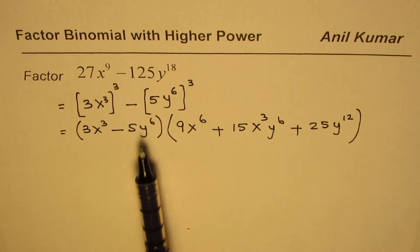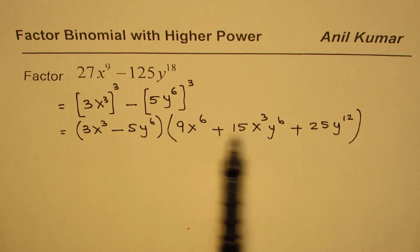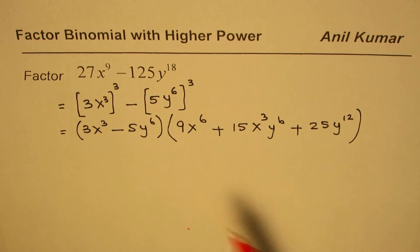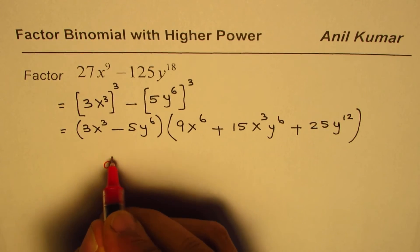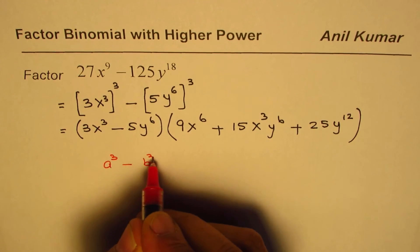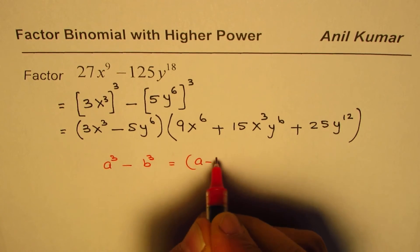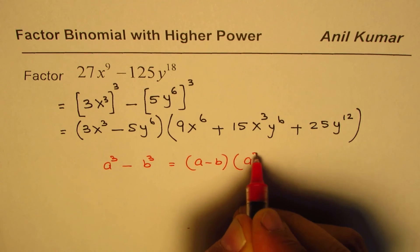So we have 3x cubed minus 5y to the power of 6, and all of this cannot be further factored. What we used here is the formula: a cubed minus b cubed equals a minus b times a squared plus ab plus b squared.